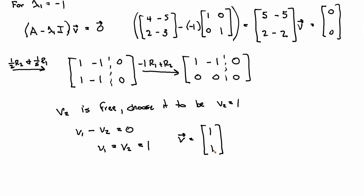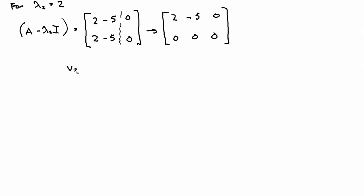Then for lambda 2 equal to 2, we want to solve this A minus lambda 2 I now. And I'll just go quickly. What you end up with is 2 minus 5, 2 minus 5, equal to 0, 0. If we just multiply the first row by minus 1 and add it to the second, we get 2 minus 5, 0, 0, 0, 0. And so then again V2 is free.